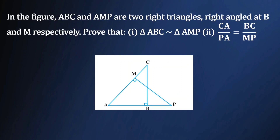In the figure, ABC and AMP are two right triangles, right angled at B and M respectively. There are two sub-questions. The first one is to prove that triangle ABC is similar to triangle AMP, and the second one is CA by PA is equal to BC by MP.